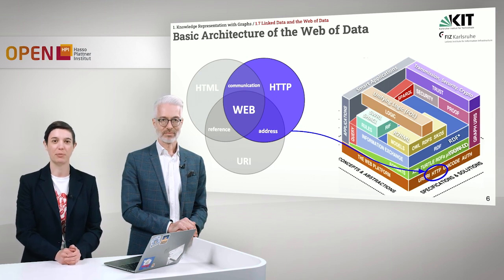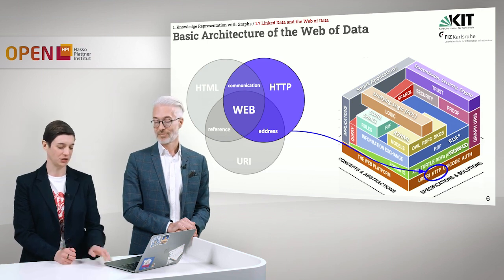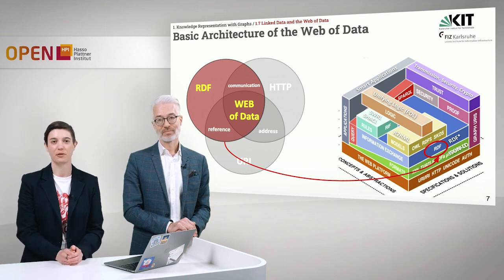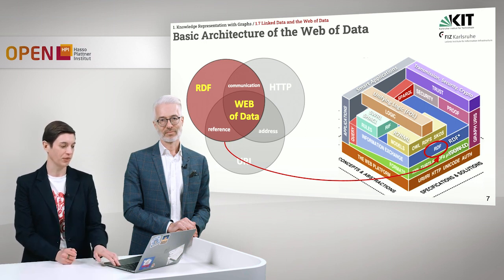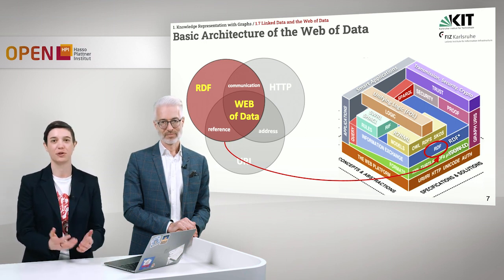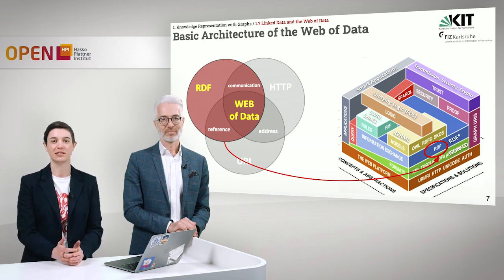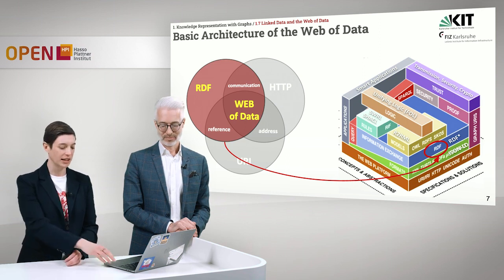Very similar to the traditional web, we also need HTTP, the Hypertext Transfer Protocol, for communication. And then instead of HTML, we need RDF, the Resource Description Framework, as an exchange format but also representation language to encode our resources. Everything together then forms the web of data. We identify resources with URI, we communicate and provide access to resources with HTTP, and we encode the resources in RDF.